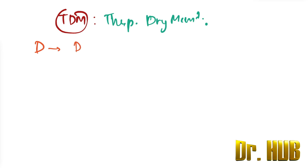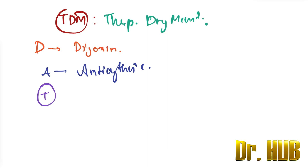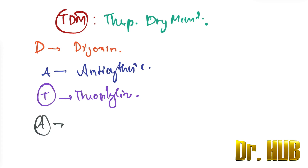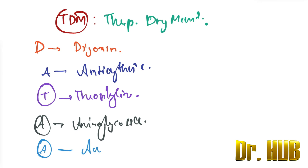The drugs requiring TDM can be remembered using the mnemonic DATA: D stands for Digoxin, A stands for Anti-arrhythmics, T is for Theophylline, and the next A is for Aminoglycosides, as well as Anti-epileptics.